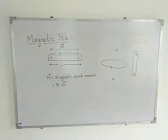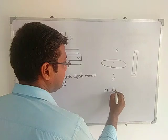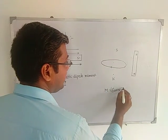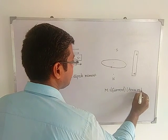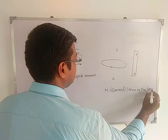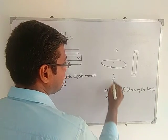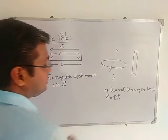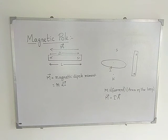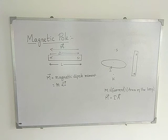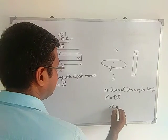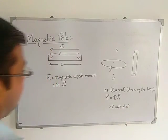The magnetic dipole moment of a current loop can be defined as m equal to the current of the loop multiplied by the area of the loop. The direction of the m vector — the magnetic dipole moment — is the direction of the area vector. Since current is in amperes and area is in meter squared, the SI unit of magnetic dipole moment is ampere meter squared.